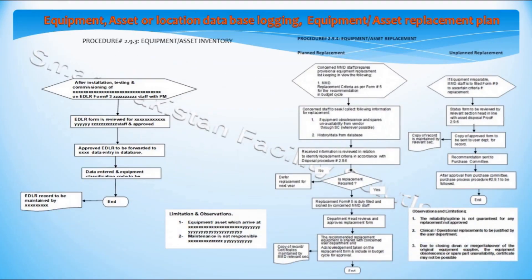Other important actions of the quality management system include logging of equipment or location — the start of the asset or facility life cycle — and disposal, which is the process at the end of its life cycle.